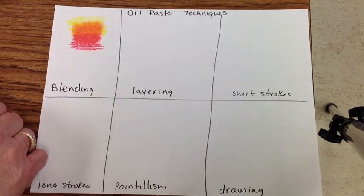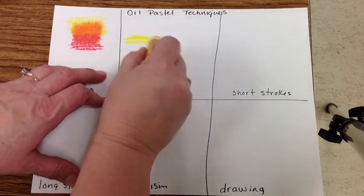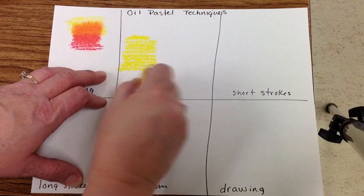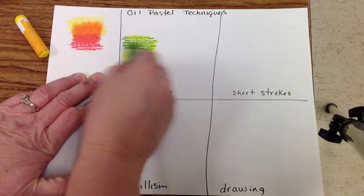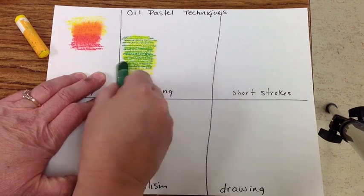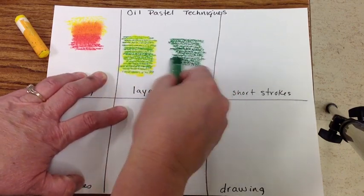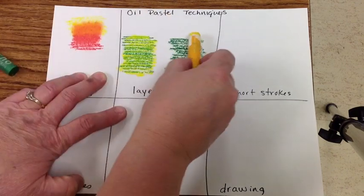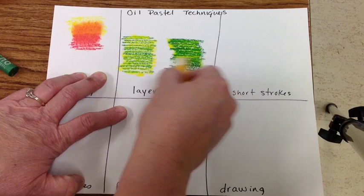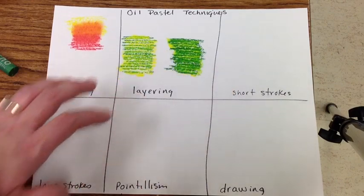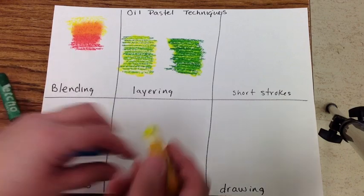The next technique is layering. You're going to apply color, and then apply the other color on top. I'm using yellow and green. See what it looks like with yellow under. Now, I'm going to put green underneath and yellow on top. Notice that depending on what color you put on top, the overall look is different. Even though you're using the same two colors, it's different.